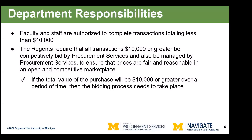The regents require that all transactions $10,000 or greater be competitively bid, and that this process is managed by procurement services to ensure a fair, reasonable, and open competitive marketplace. The $10,000 limit applies not just to a single payment, but to the entire life of the engagement. So if you are making multiple payments over a period of time that add up to more than $10,000, procurement will need to be contacted. Incidentally, $10,000 is also the federal micro purchase threshold.